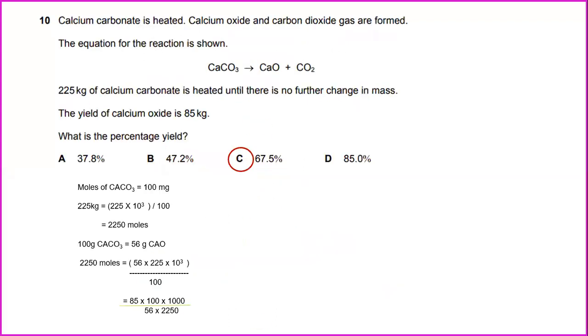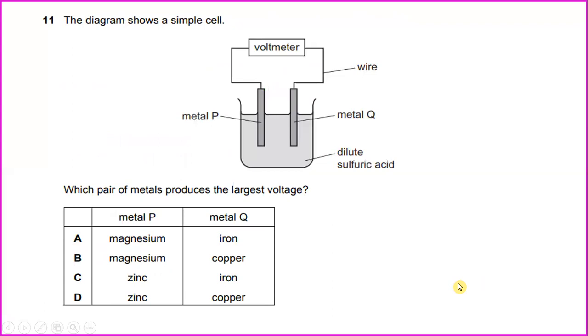Question number 10. Calcium carbonate is heated when calcium oxide and carbon dioxide gas are formed and the equation for the reaction is shown. 2.5 kg of calcium carbonate is heated until there is no further change in mass. The yield of calcium oxide is 85 grams. What is the percentage yield? The answer for this will be 67.5 percent. The diagram shows a simple cell. Which pair of metals produce the largest voltage? The answer will be metal P is magnesium and metal Q is copper.